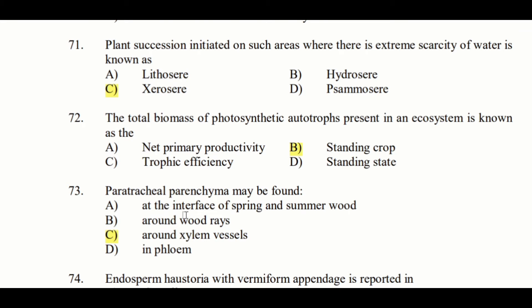Paratracheal parenchyma may be found around xylem vessels. The answer is around the xylem vessel — they are called paratracheal parenchyma. Paratracheal parenchyma are arranged in association with the vessels and may be diffused or branched.